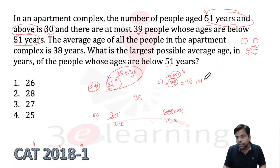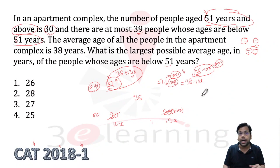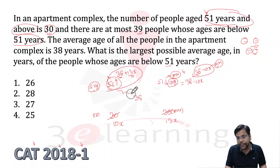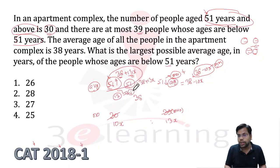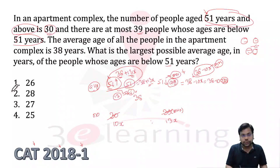I want to maximize the value 38 + 13x. When do you get the maximum? When x is minimum. The minimum integer value of x is 1. So if x = 1, then 38 − 10(1) = 28. So the answer to this question is 28.